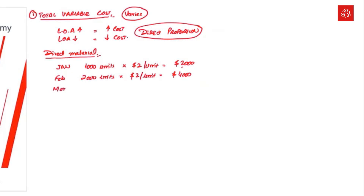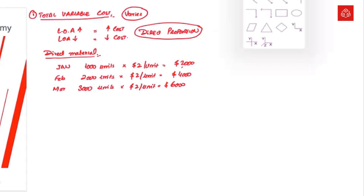In March I further decided to increase my activity from 2,000 to 3,000 units, and the cost per unit is two dollars, so it will be $6,000. What is happening here: when the level of activity increases from January to February — from 1,000 to 2,000 units — the total variable cost also increases from $2,000 to $4,000. If we plot these values on a graph, this will give us a better idea.